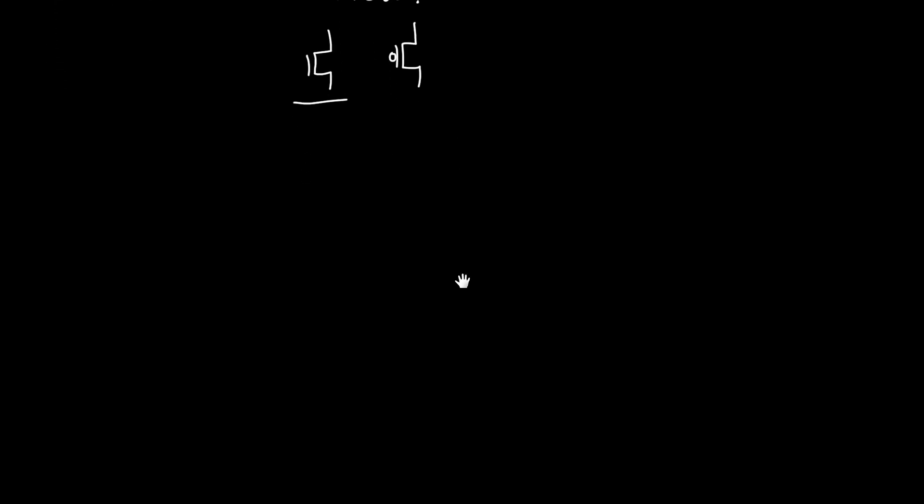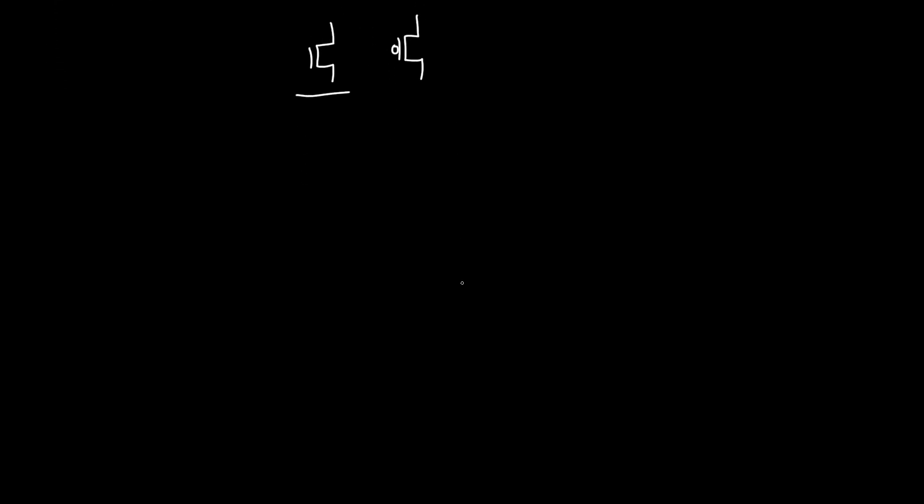So in particular, we have our NMOS and our PMOS transistors to work with. So let's start with the NMOS. What happens when we try to make a transmission gate just out of an NMOS transistor? So say, let's just turn it on its side so that we can have our input on the left and our output on the right. And because we've already called this the input, I'm going to call this signal that we're sending to the gate phi.